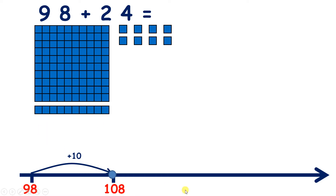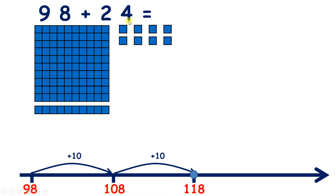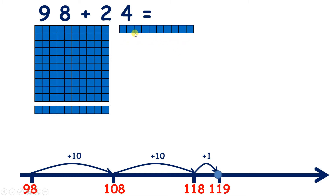Now if we add another 10, we have 118. So we've added two 10s — you might think: how can we have added two 10s if we now have only one 10? Remember, one of our 10s was used to make our 100 square, so we've added 20 to 98 to make 118. Now we need to add four units. One more unit gives us 119, another unit means we now have 10 units, so let's push our units together to make a 10, and now we have 100 and two 10s, so we have 120.